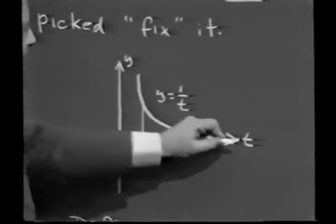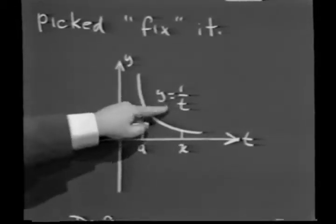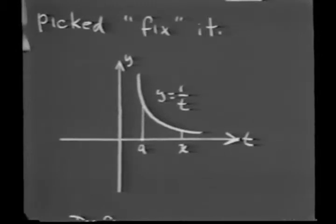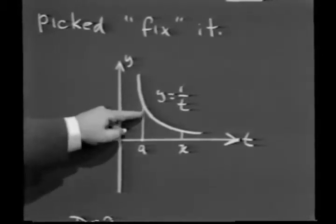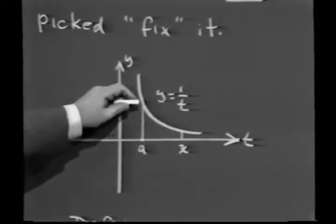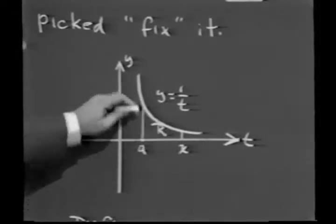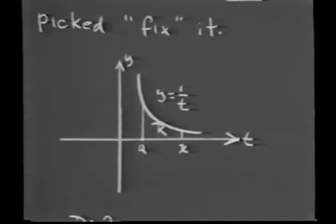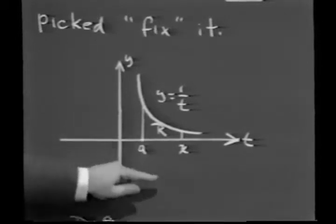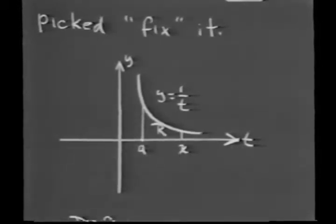Now what we'll do is in the yt plane, we'll draw the curve y equals 1 over t. And what we do now, we'll study the area of the region R, where R is bounded above by y equals 1 over t, on the left by t equals a, on the right by t equals x, and below by the t-axis.